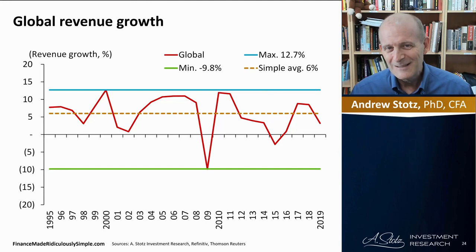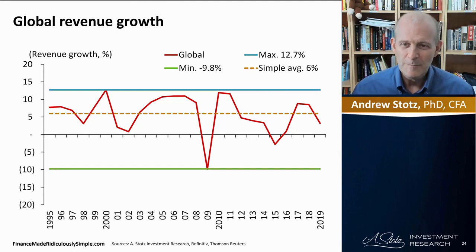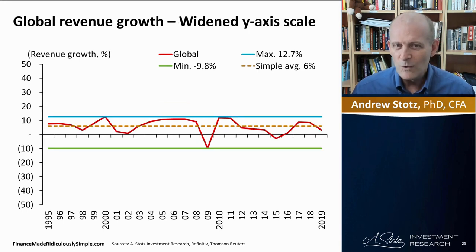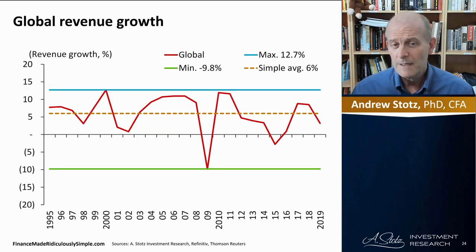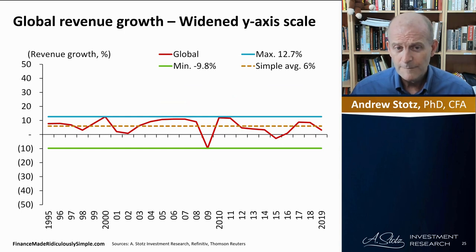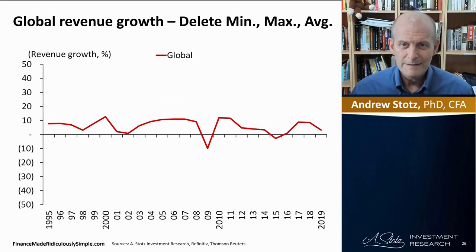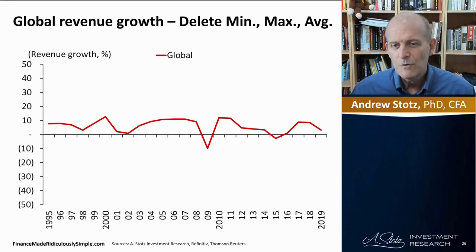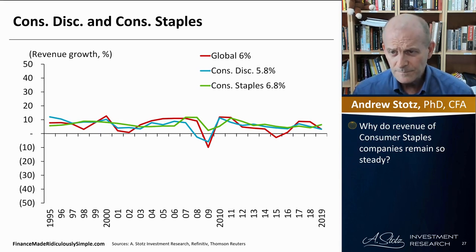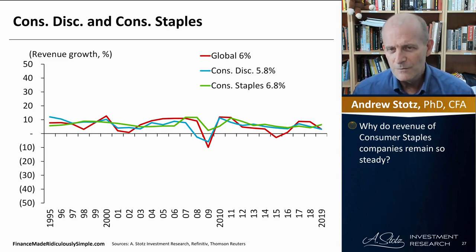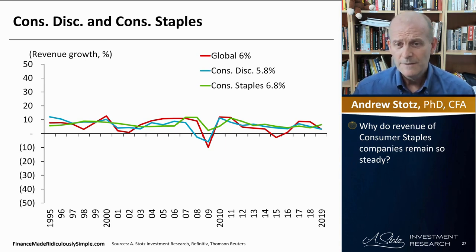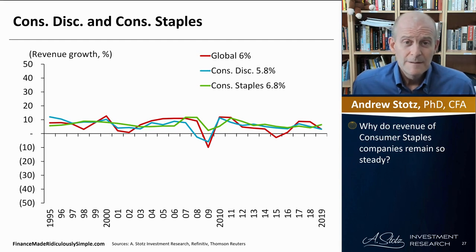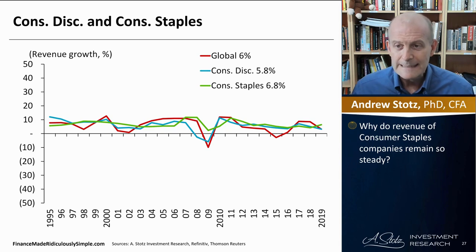Now let's look at the global revenue growth chart in more detail. I'm going to widen the y-axis from plus/minus 20 to plus/minus 50, remove the minimum, maximum, and average lines, and plot consumer discretionary and consumer staples revenue growth. The global line didn't change. Consumer staples and consumer discretionary move pretty much in line with the overall market, but in 2008 and 2009, the consumer discretionary sector collapsed a lot more than consumer staples. That makes sense — people postpone buying a discretionary item like a TV.